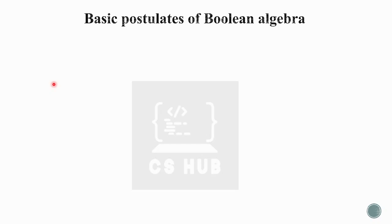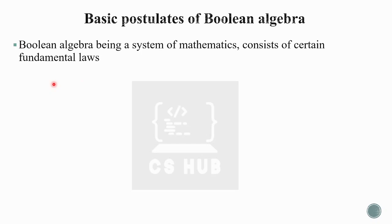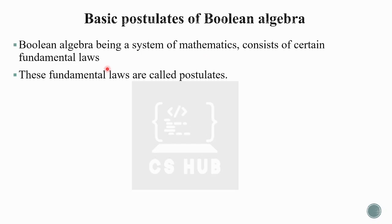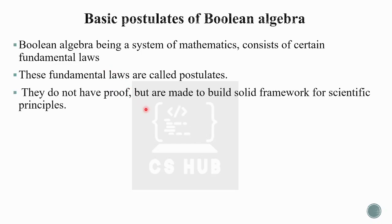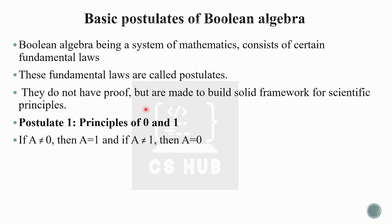These are basic postulates of Boolean algebra. Boolean algebra, being a system of mathematics, consists of certain fundamental laws called postulates. These fundamental laws do not have proof, but are used to build a solid framework for scientific principles. The first postulate: if a is not equal to 0, then a equals 1; and if a is not equal to 1, then a equals 0.